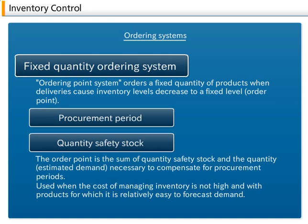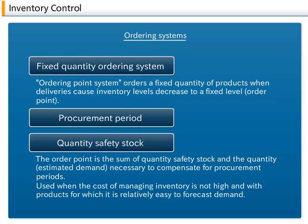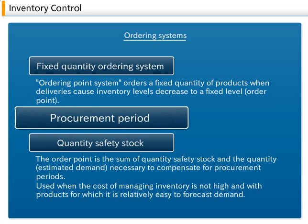A fixed quantity ordering system orders a fixed quantity of products when inventory levels decrease to a fixed level called the order point. The time from when a product is ordered to when it is delivered is called a procurement period.